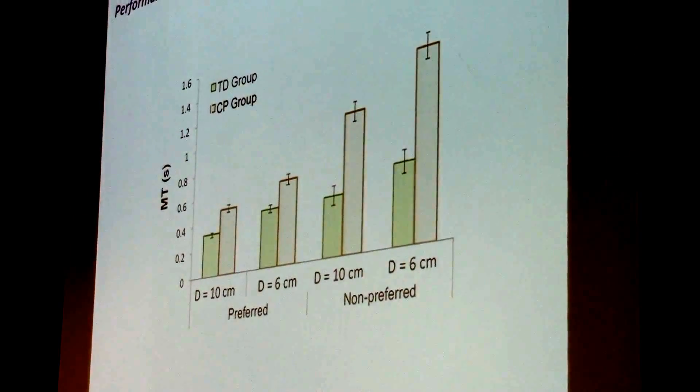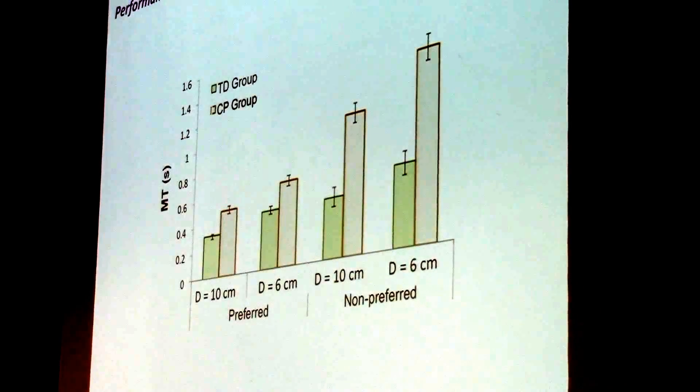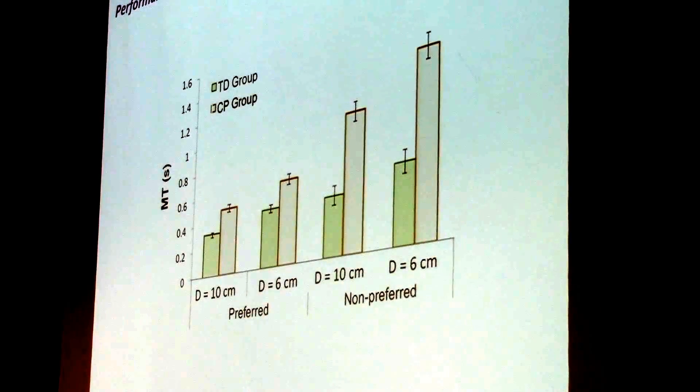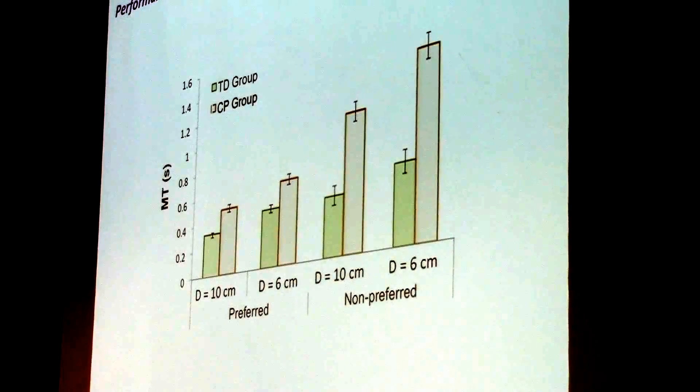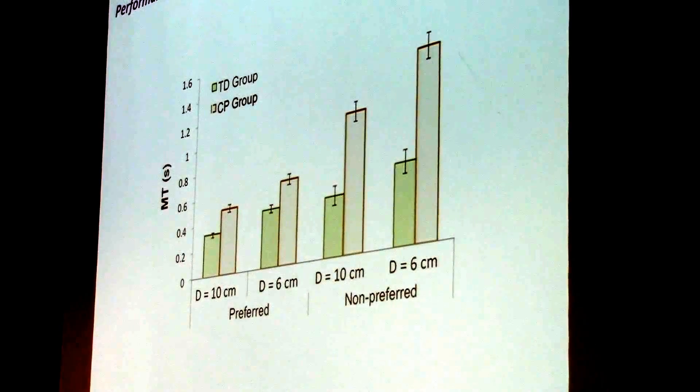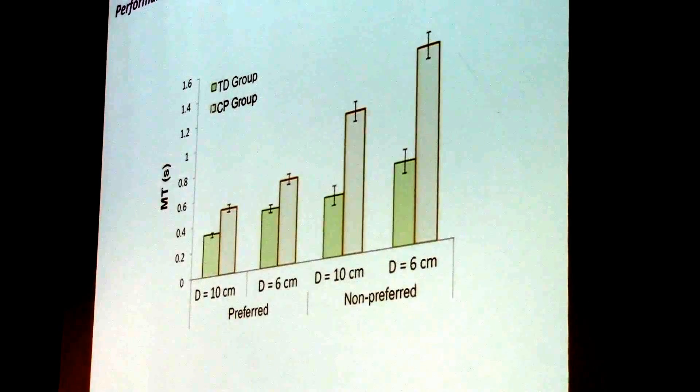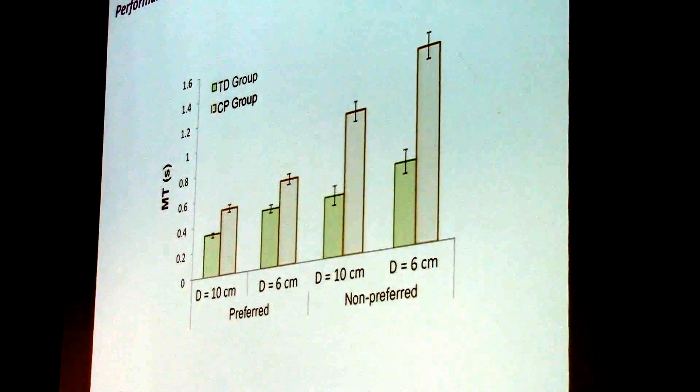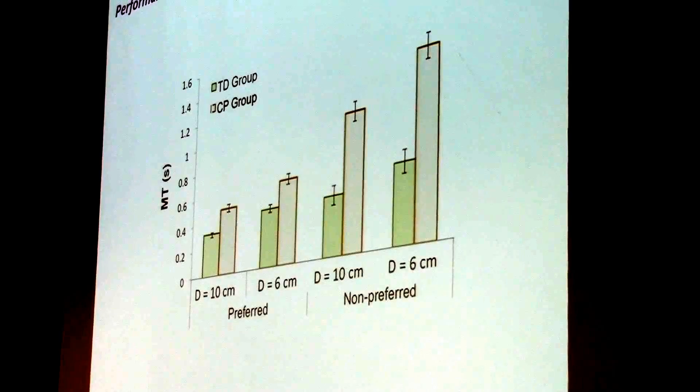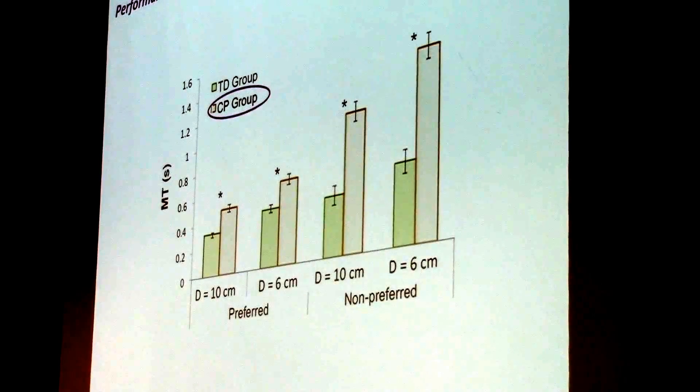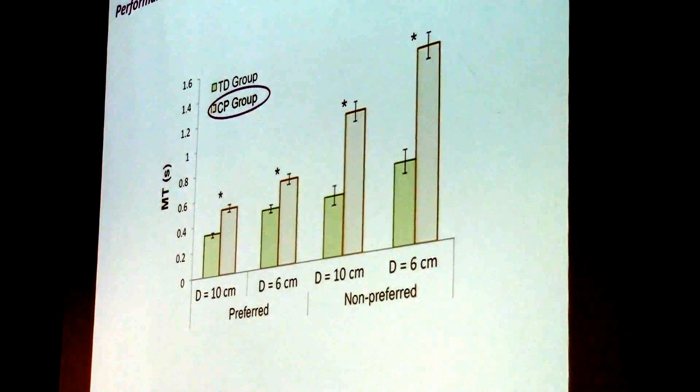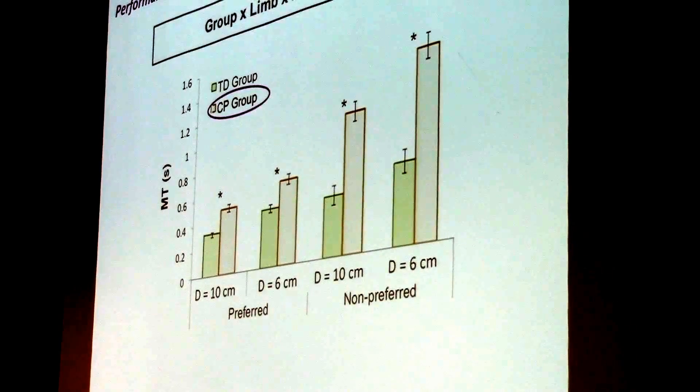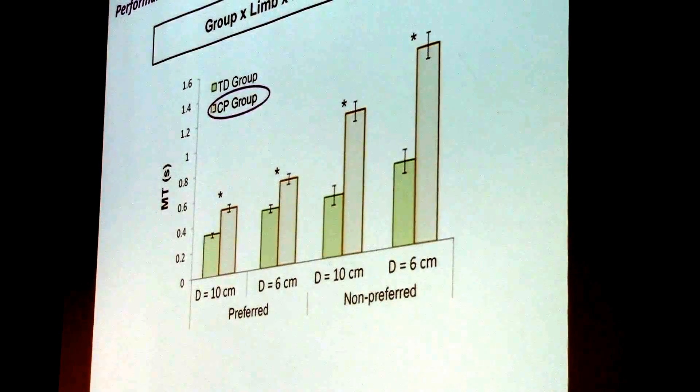So here are the results. I'll talk about performance first. So on the y-axis we have movement time, and then we have the different targets, 10 and 6, and preferred and non-preferred hand. We replicated literature results in the sense that individuals with CP performed worse. They were slower. So the group in orange or yellow is the CP group. You see movement times are across the board larger.